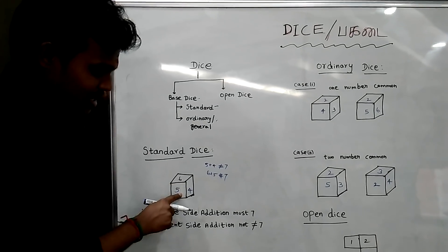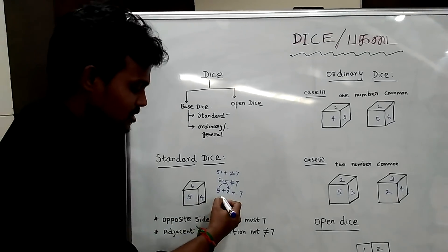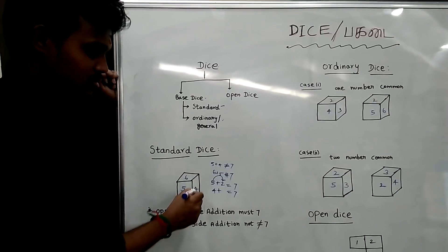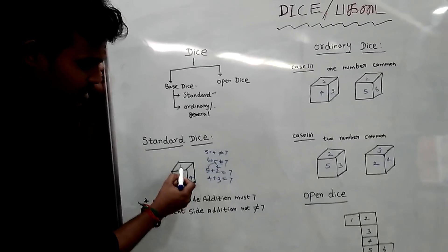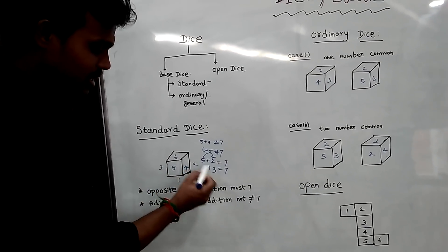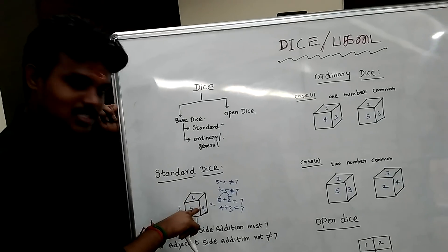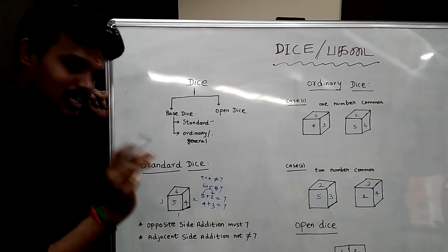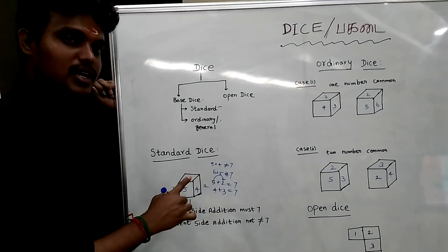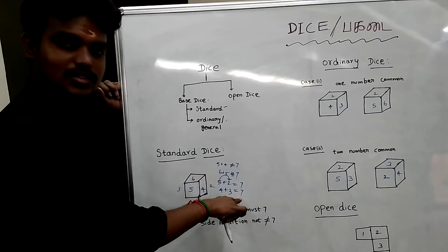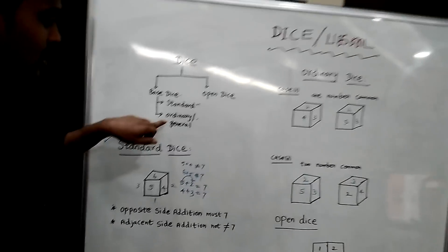Suppose 4, 3 — 7. 6, 1 — 7. 5, 2 — 7. These are the opposite face pairs on a standard dice, each summing to 7.